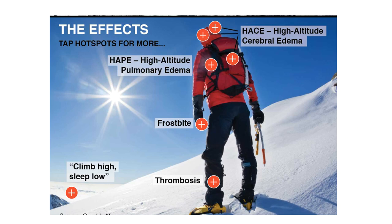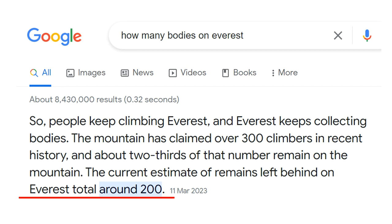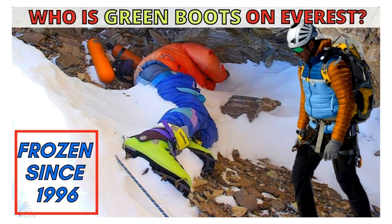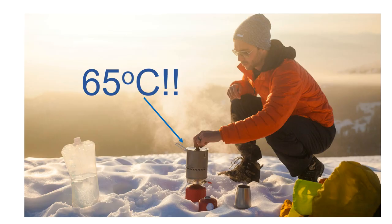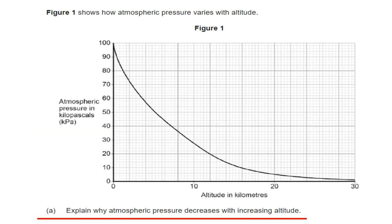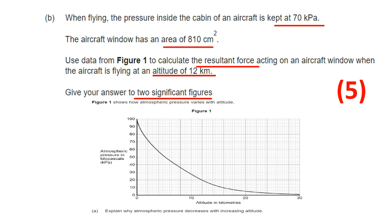Above a certain altitude, conditions become a dead zone where nothing can survive. There are around 200 bodies of climbers still on Everest because it's too difficult to retrieve them. The boiling point of water at Everest's summit is only 65°C due to the lower atmospheric pressure. Atmospheric pressure decreases with altitude because there are fewer air molecules, resulting in fewer collisions with surfaces.